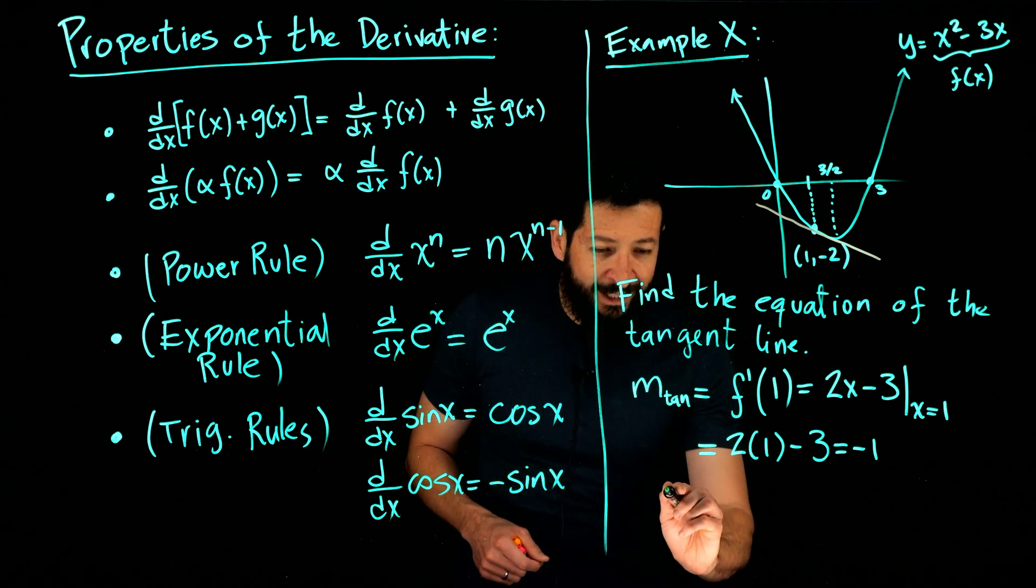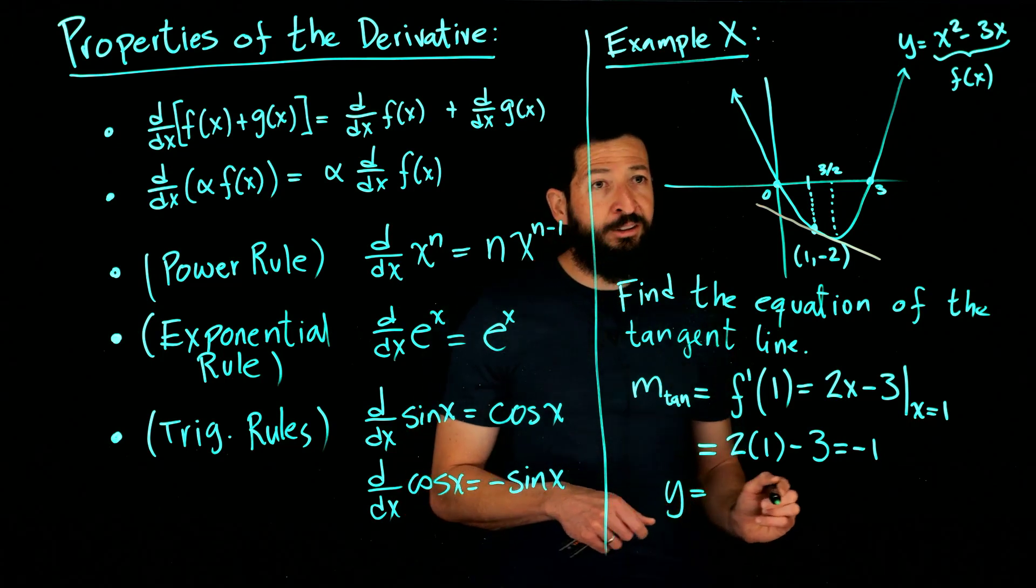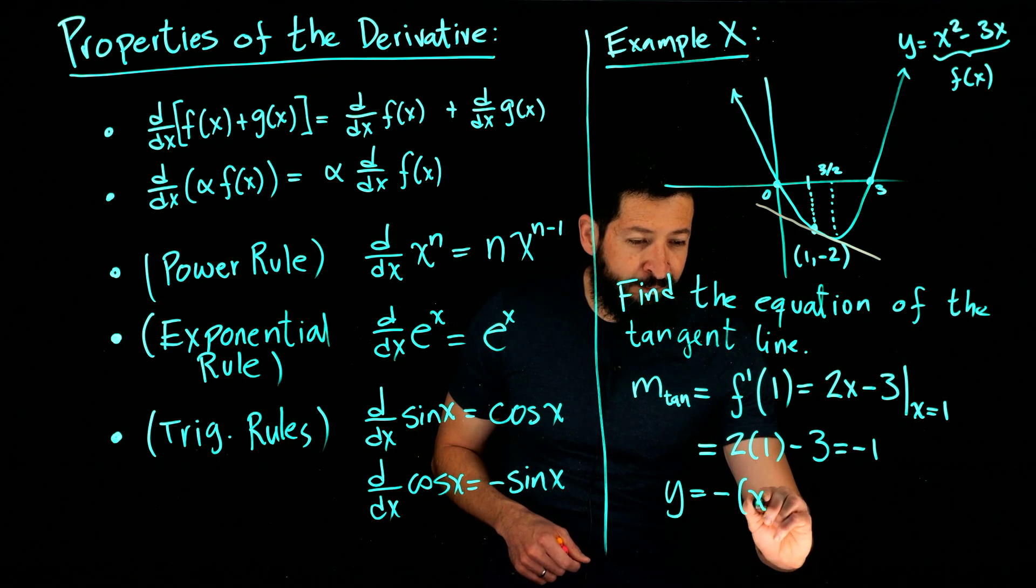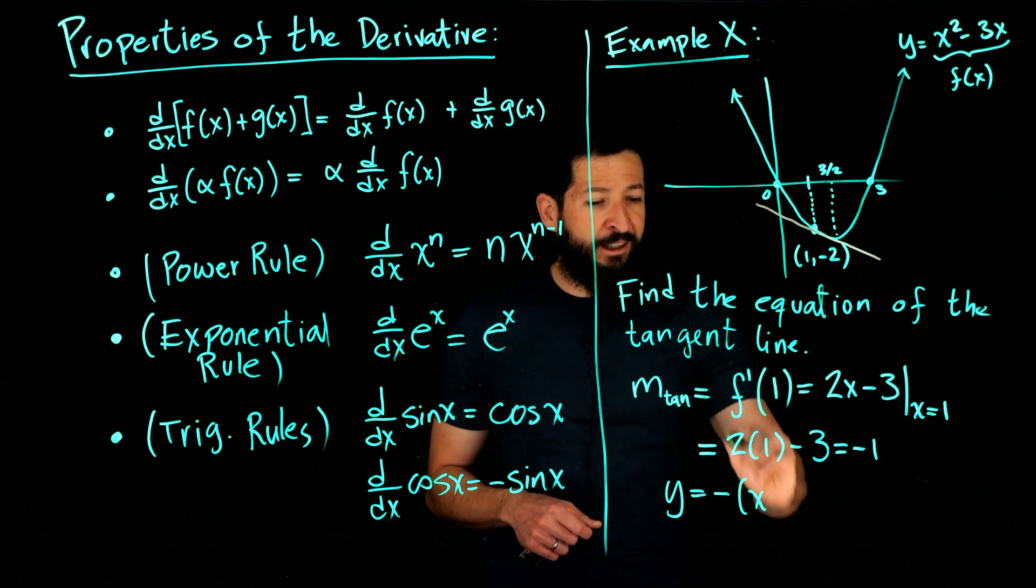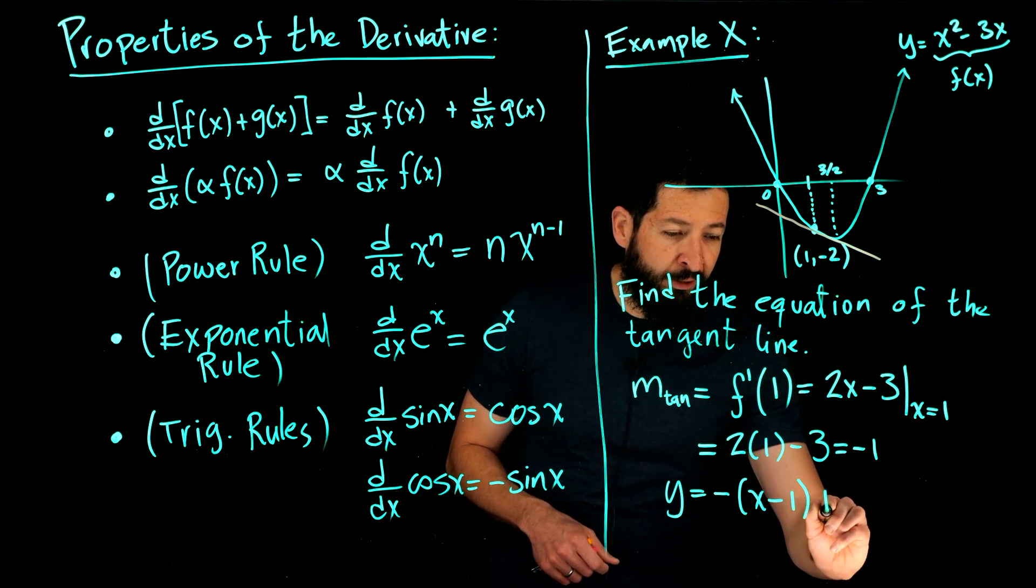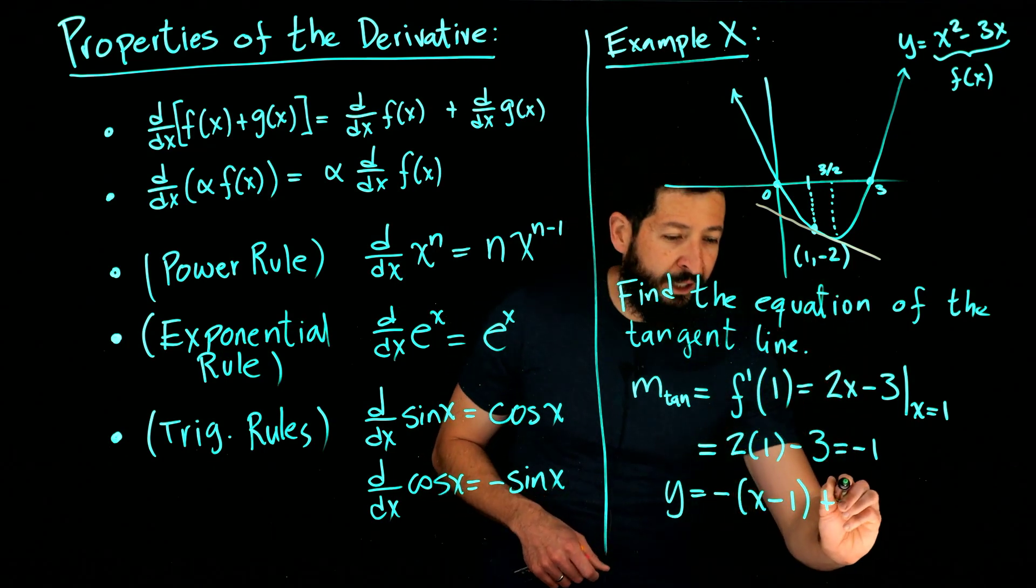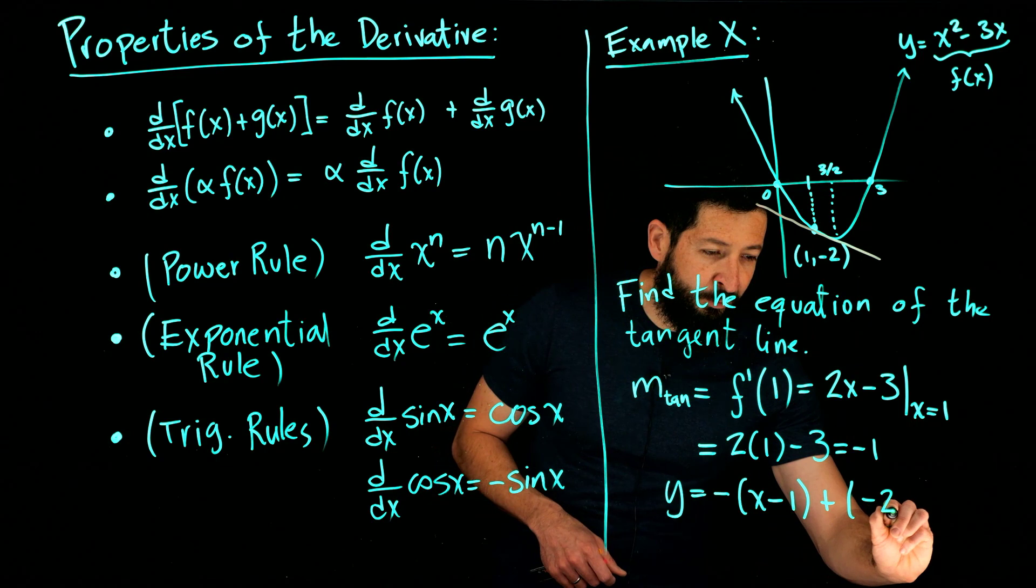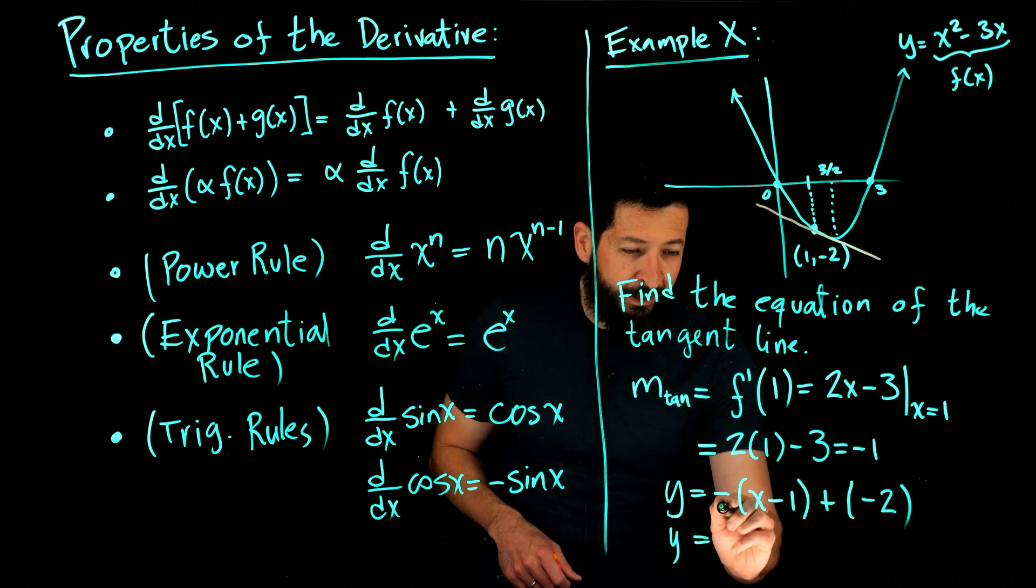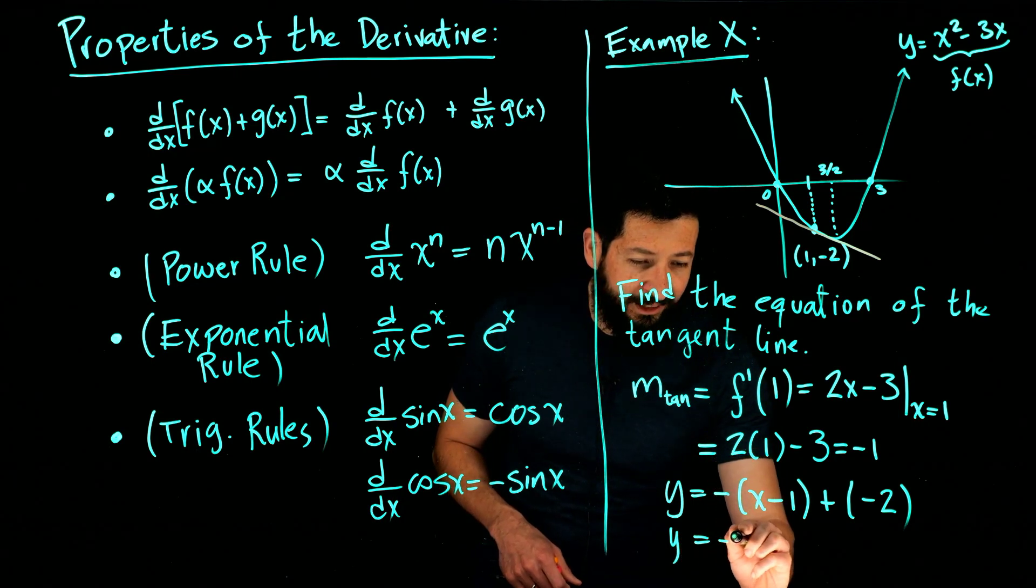So we grab our slope, negative one, then x minus the x coordinate of the point, minus one, and then we do plus the y coordinate of the point, negative two. Actually, I'm going to be able to write it in slope form if I fit it here. So the equation will be y. When I distribute, I get a negative x, then I'm going to have a negative negative one is a positive one, plus negative two minus one.